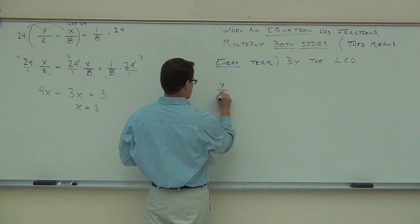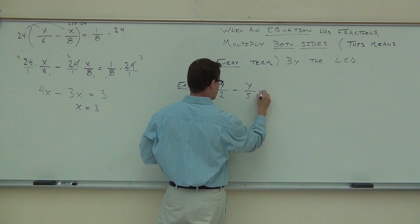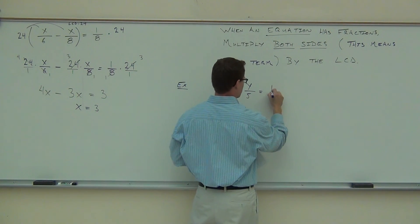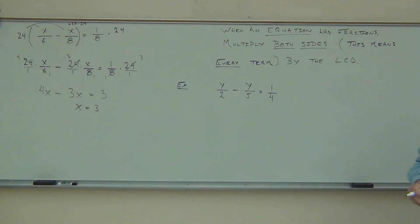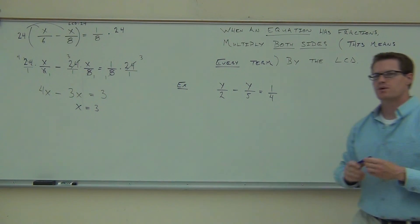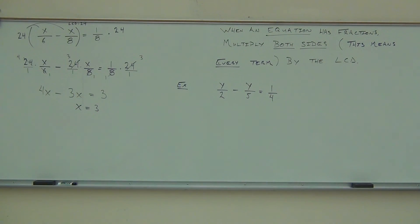I am going to give you one to try on your own. Let's try that out just to make sure you can handle this. Let's do y over 2 minus y over 5 equals 1 fourth. Give that a try. Remember, anytime you have an equation, you can eliminate those fractions. That's a great thing. That's a great thing about equations. Give that a try. I'll be walking around if you need help.